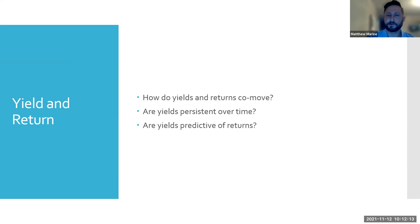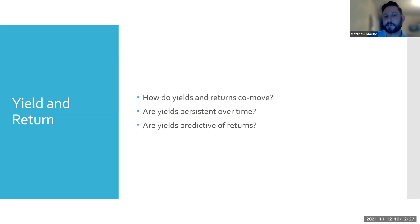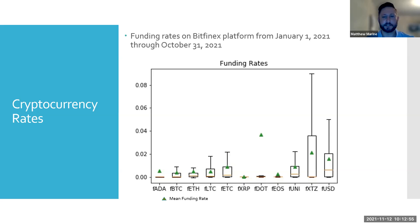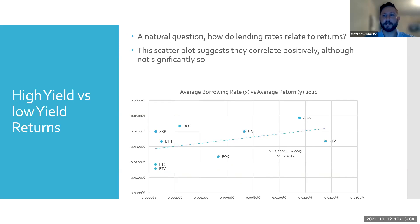After realizing this had become a crowded trade, I shifted focus to examining the relationship between cryptocurrency yields and returns, and questioning their persistence and predictability. This box plot shows funding rates for a basket of currencies pulled from OKEx in 2021. They exhibit bouts of scarcity — that's why you get strange-looking plots where demand to borrow certain currencies spikes and rates go through the roof. The natural question is: how do lending rates relate to returns? A scatter plot shows a positive but not super significant correlation.